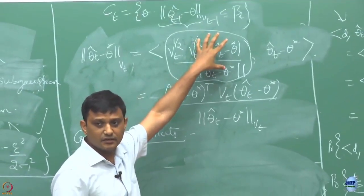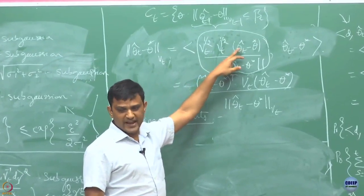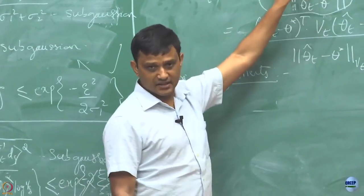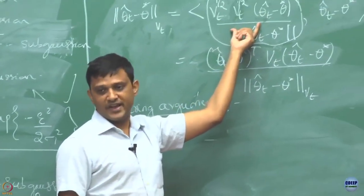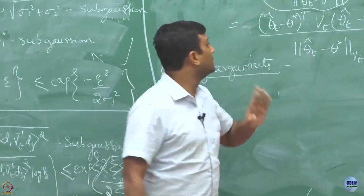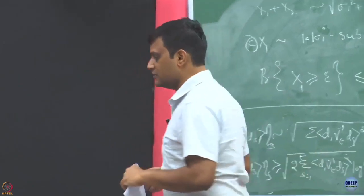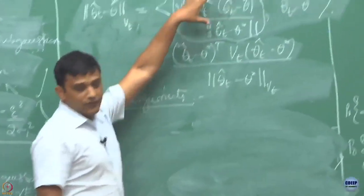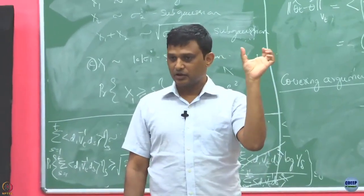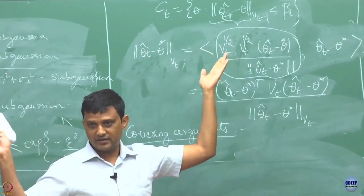This quantity here is random, and it leads to a column vector which could be any value — it can take any possible value in my R^d space. Because theta-hat is a random quantity, this quantity can be anywhere in R^d space. I do not know what this value is; it depends on the value of theta-hat and also other quantities — theta-star and the matrix V_t at that time. So it can take many possible values in the space R^d. We are going to first discretize these possible values and then focus on the discrete ones.